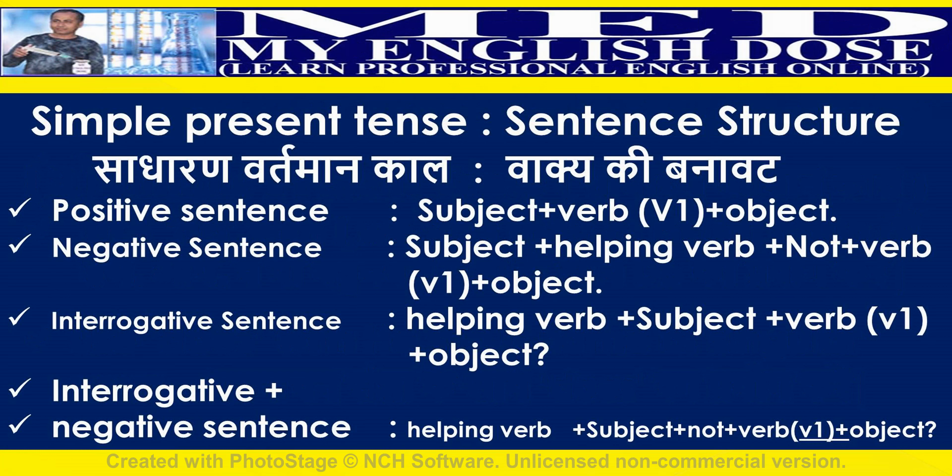Simple present tense sentence structure: Positive sentence — subject plus first form of a verb plus object. Negative sentence — subject plus helping verb plus not plus first form of a verb plus object. Interrogative sentence — helping verb plus subject plus first form of a verb plus object. Interrogative negative — helping verb plus subject plus not plus first form of a verb plus object.